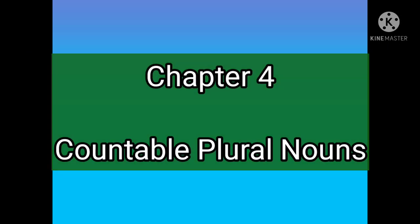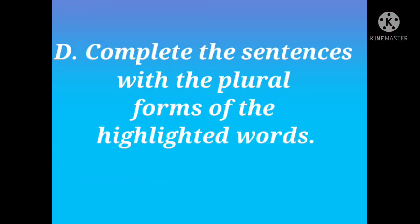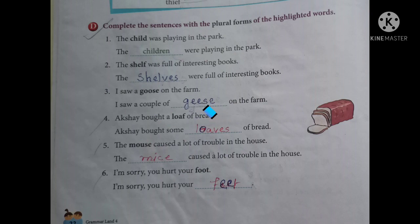Hello students of Class 4. Today we will discuss Exercise D of Chapter 4, Countable Plural Nouns. In Exercise D, we have to complete the sentences with the plural forms of the highlighted words. In every sentence there is a highlighted word, and we have to change it to its plural form.